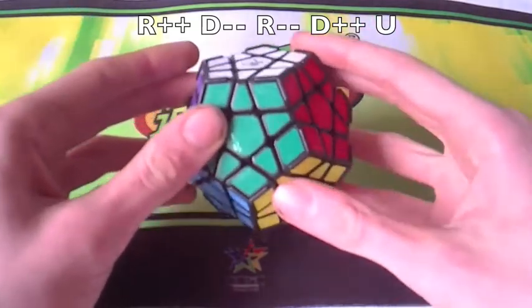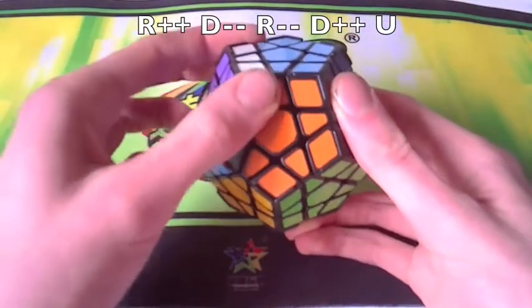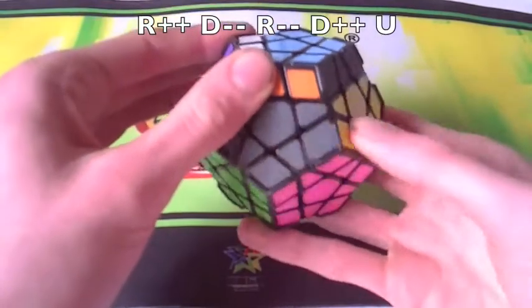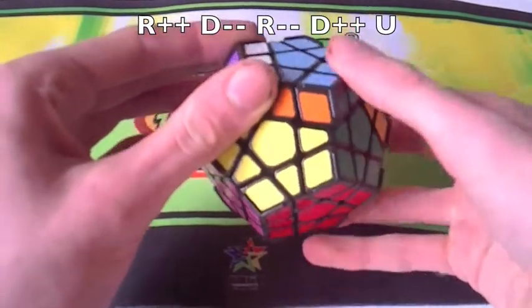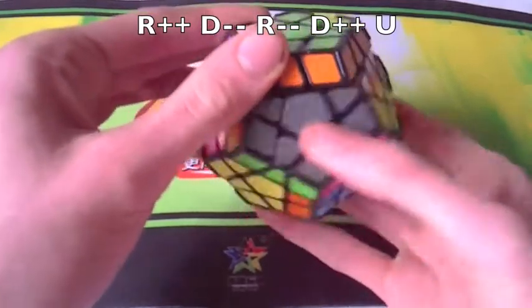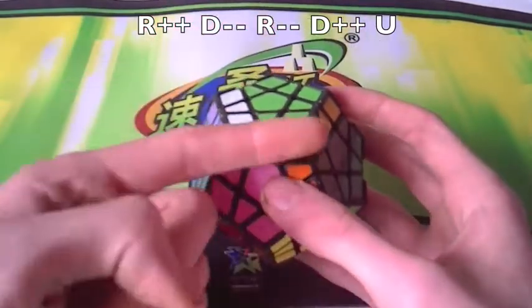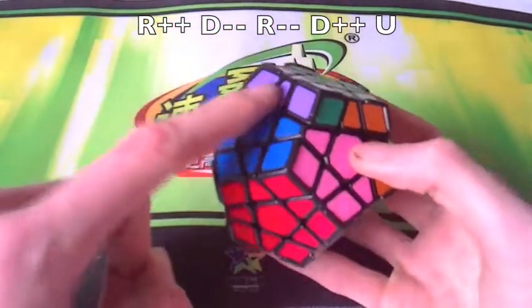So this would be R++, D minus, R minus, and D++. And then at the end there's just a U move to mix up this bit.